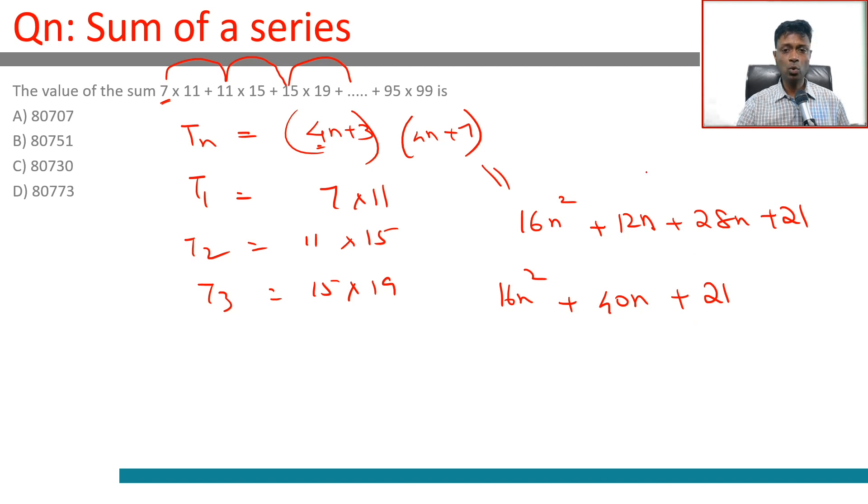If you put 4n plus 3 equal to 95 to get to the last term, then 4n is 92, n is 23. N goes from 1 to 23, there are 23 terms in the summation.